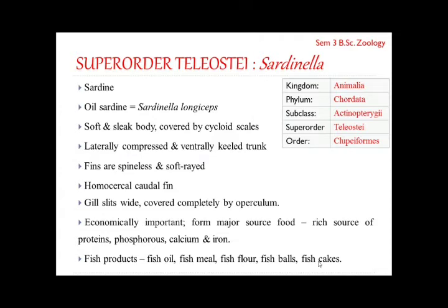The body of sardines is externally soft and sleek, covered by cycloid scales. The trunk is laterally compressed and ventrally keeled — keeled meaning a small marginal structure with a series of ventral scutes. Fins are spineless and soft-rayed. The oil sardine is distinct from other species in having an elongated body, long head, and a convex dorsal surface and ventral profile. Its dorsal fin is located more towards the caudal fin.